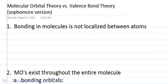Let's take a moment to discuss the key differences between molecular orbital theory and valence bond theory. In valence bond theory, we said that bonding was localized between atoms, and that's just not the case in molecular orbital theory.